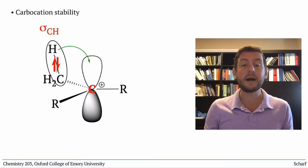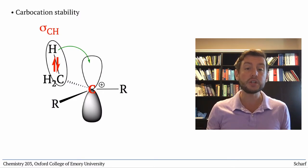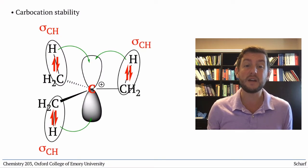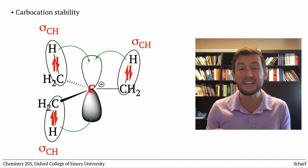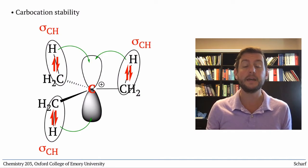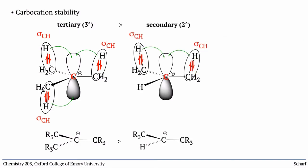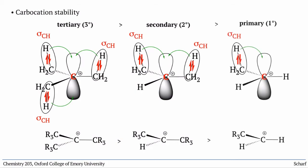These nearby sigma bonds are usually pretty terrible donors though, so it takes quite a few to make a carbocation even remotely stable. This means that tertiary carbocations are more stable than secondary carbocations, which are much more stable than primary or methyl carbocations, and therefore SN1 reactions are most likely to occur when a leaving group is tertiary. And they never occur when the leaving group is primary.